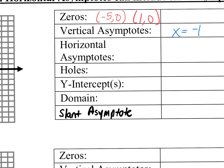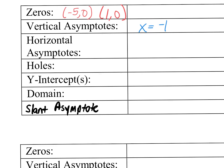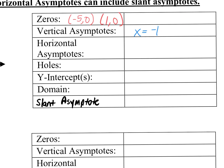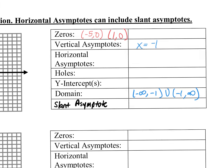What about the domain? Since vertical asymptotes and domain go hand in hand, what's your domain for this function? Negative infinity to negative 1, union negative 1 to infinity. Perfect, good job.